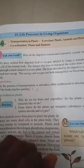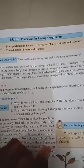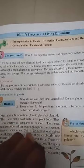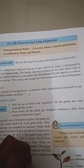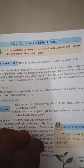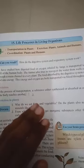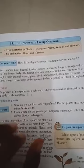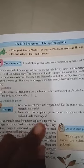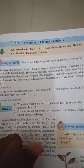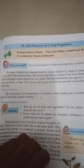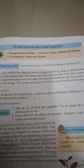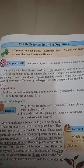We have already studied how digested food and oxygen inhaled by the lungs get transferred and respired by every cell of the human body. Just like a farmer transports water from a well through dams and main channels to every plant, food absorbed by the digestive system is converted into energy, and this energy and oxygen are both transported via blood throughout the body.